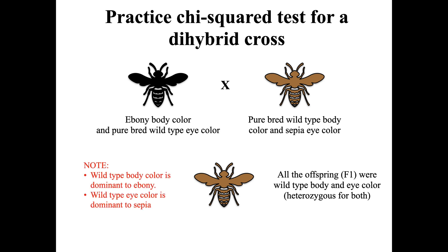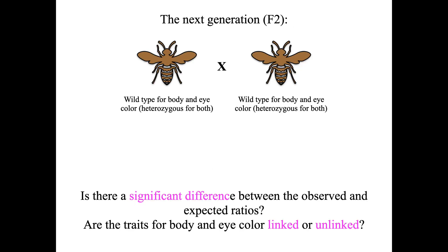Something to note here is that wild type is always dominant to either ebony in terms of body color or sepia in terms of eye color. Just like the previous example, the offspring in the F1 generation were all wild type for body and eye color, heterozygous for both traits. In the F2 generation, we cross these wild type, heterozygous for both body and eye color.